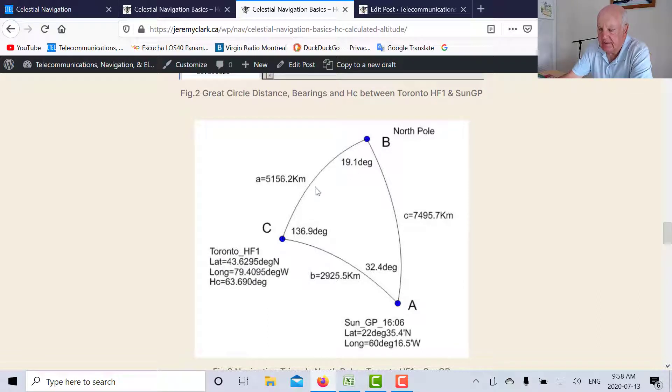So this distance here is equal to the colatitude of C or 90 degrees minus the latitude, so we can work that out. And this distance here is the colatitude of A. So we know this distance and this distance and we know this angle. This angle is the difference in longitudes.